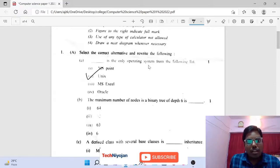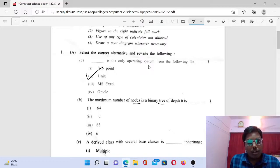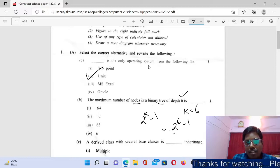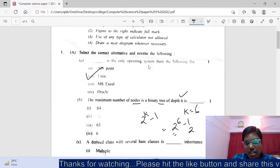Over here, the maximum number of nodes in a binary tree of depth 6 is how much? The formula for the maximum number for a binary tree is 2 raised to k minus 1. So 2 raised to k, where k they have given is equal to 6. So 2 raised to 6 minus 1.